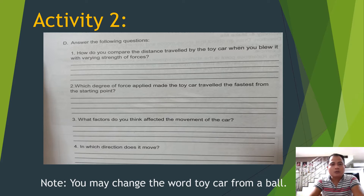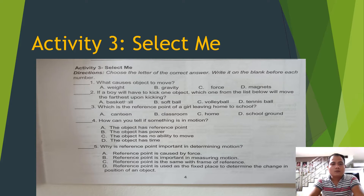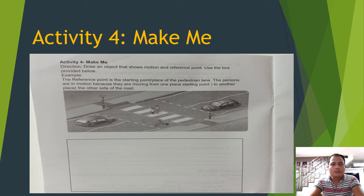Activity 2: answer based on the video you have watched. Note: you may substitute the word 'toy car' with 'ball.' With the guidance of your parents and guardians, do Activity 3, Select Me — just write the letters of your answer on the blank provided. Then do Activity 4, Make Me — draw an object that shows motion and a reference point, using the box provided.